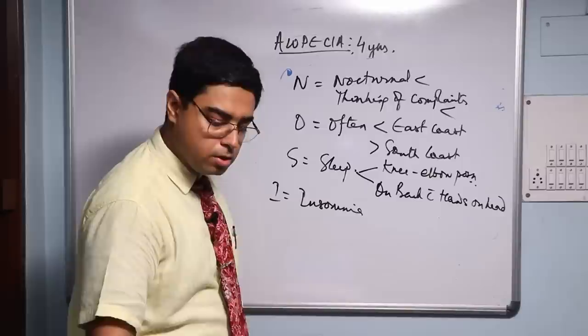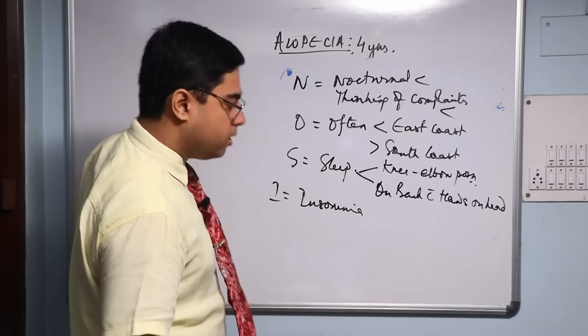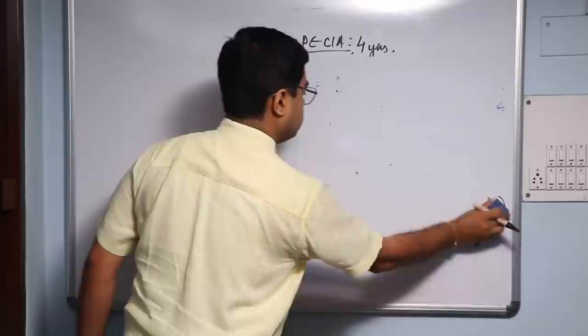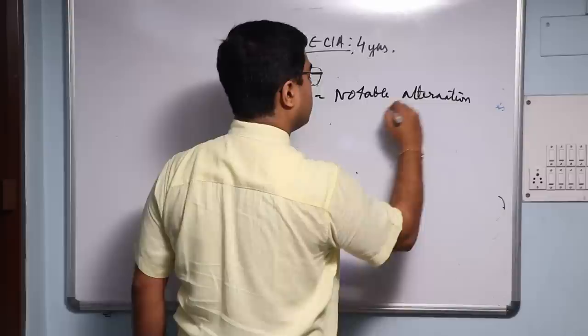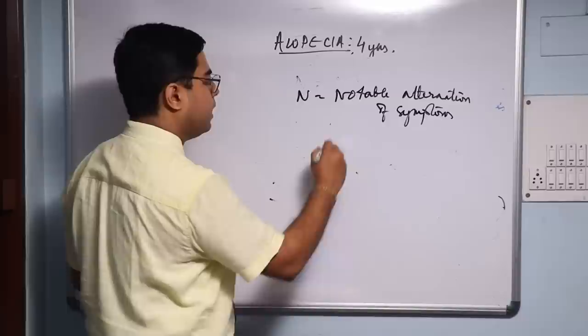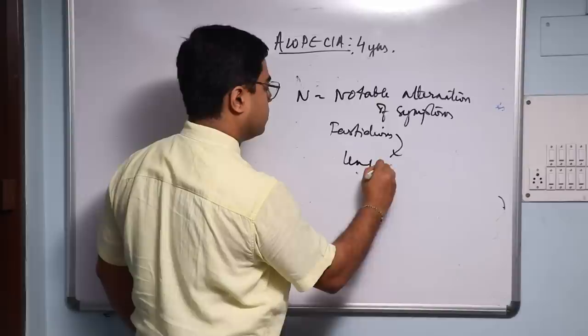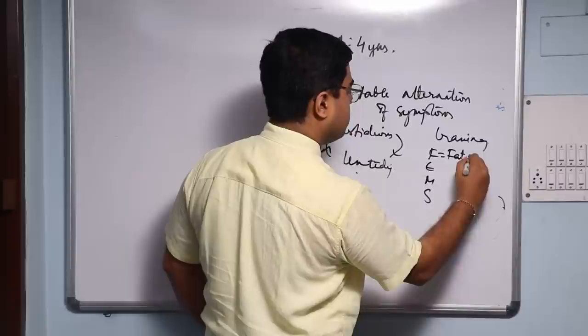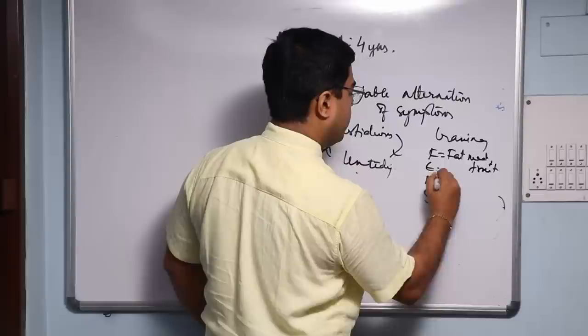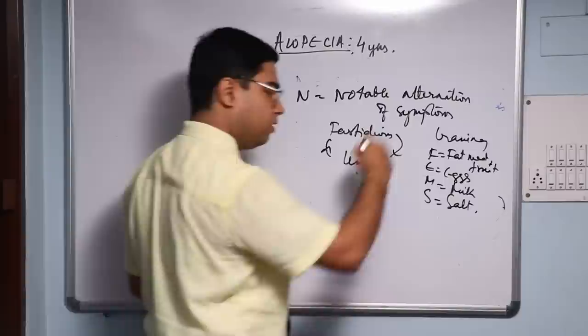And lastly we come to N - Notable alternation of symptoms. Remember for Carcinosin there is notable alternation of symptoms. So you can find them to be fastidious and then to be untidy. They have a craving: FEMS - Fat, Eggs, Milk, Fruit, Salt. So they may have been craving for these things but may have an aversion to these things as well.